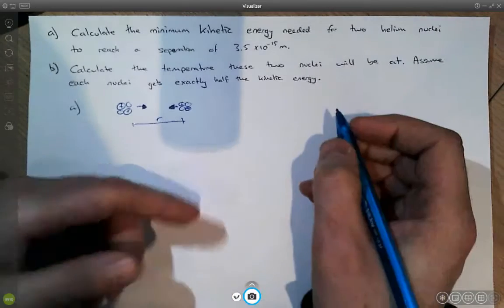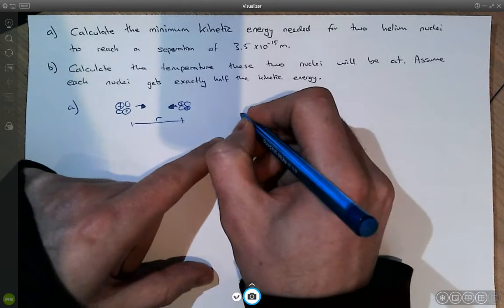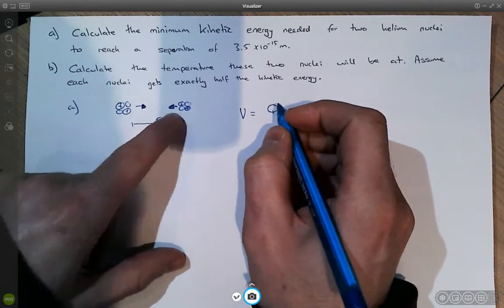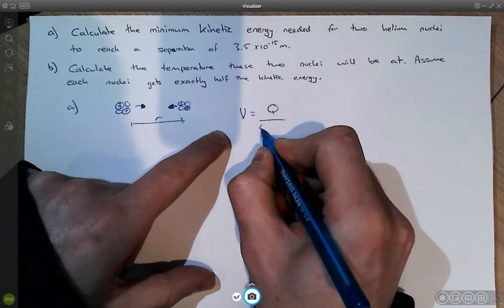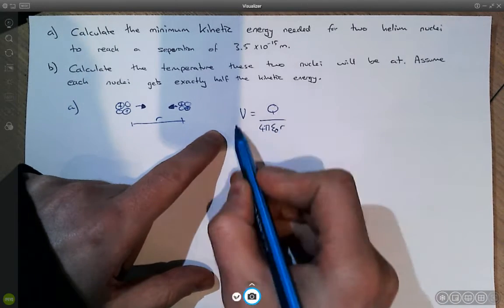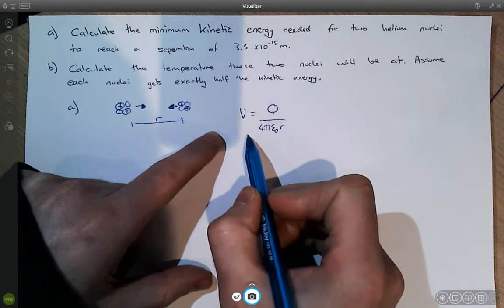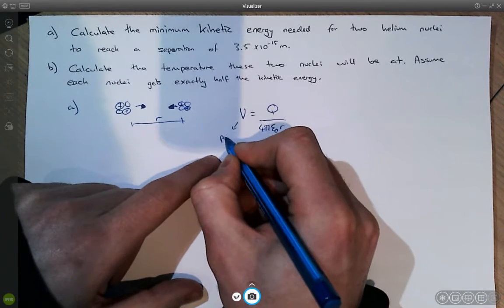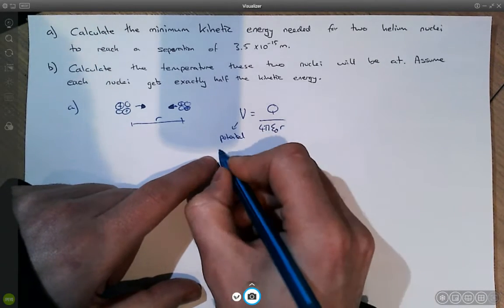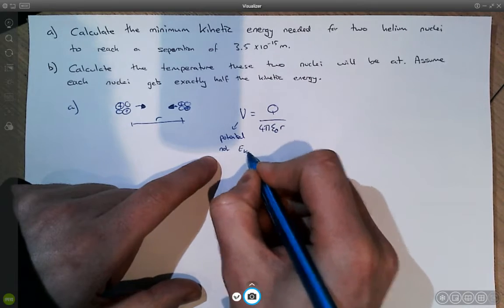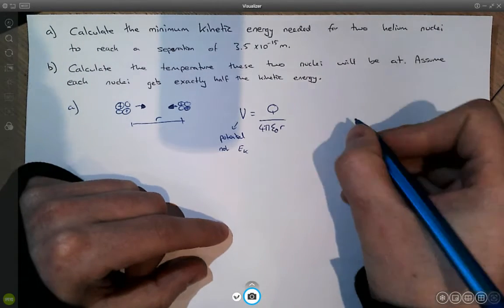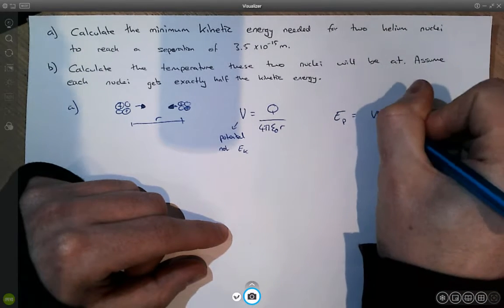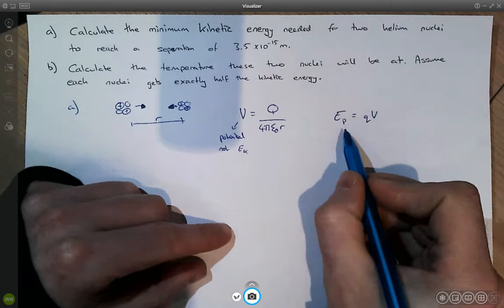So what we need to realize is that the electric potential between the two charges varies according to this formula. But this on its own we can't equate this to kinetic energy because this is the electrical potential, it is not the kinetic energy. So what we need to do is we need to use our relationship between the electrical potential energy and the electrical potential which is given by this relationship here.